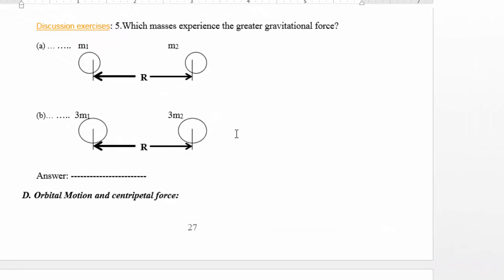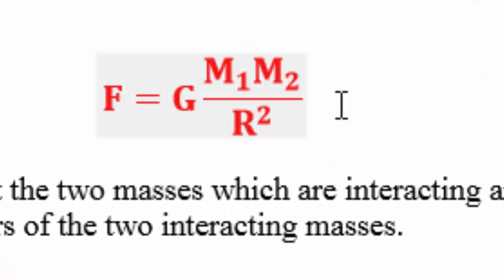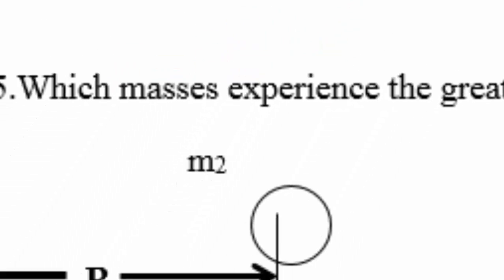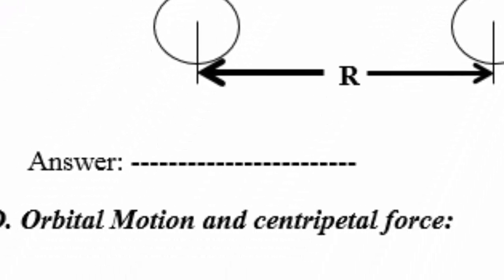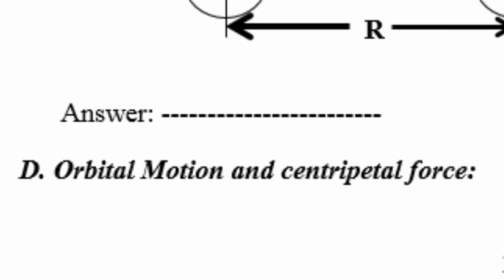Now what happens if we increase the mass? In this example we keep the distance the same but increase each mass from m to 3m. The force will increase nine times because you have G times 3m1 times 3m2, which gives 9·m1·m2 divided by r². So the force increases ninefold. Notice that this is the general law of gravity. I hope you found this lesson educational — let me know if you have any questions. Thank you.